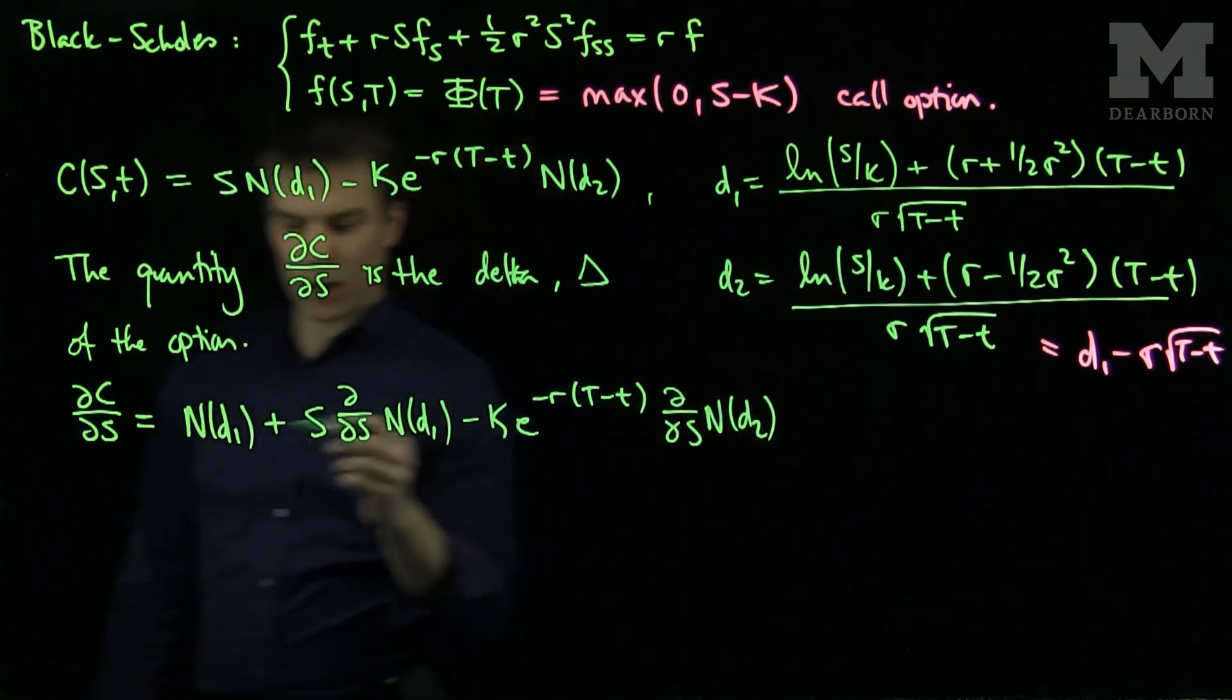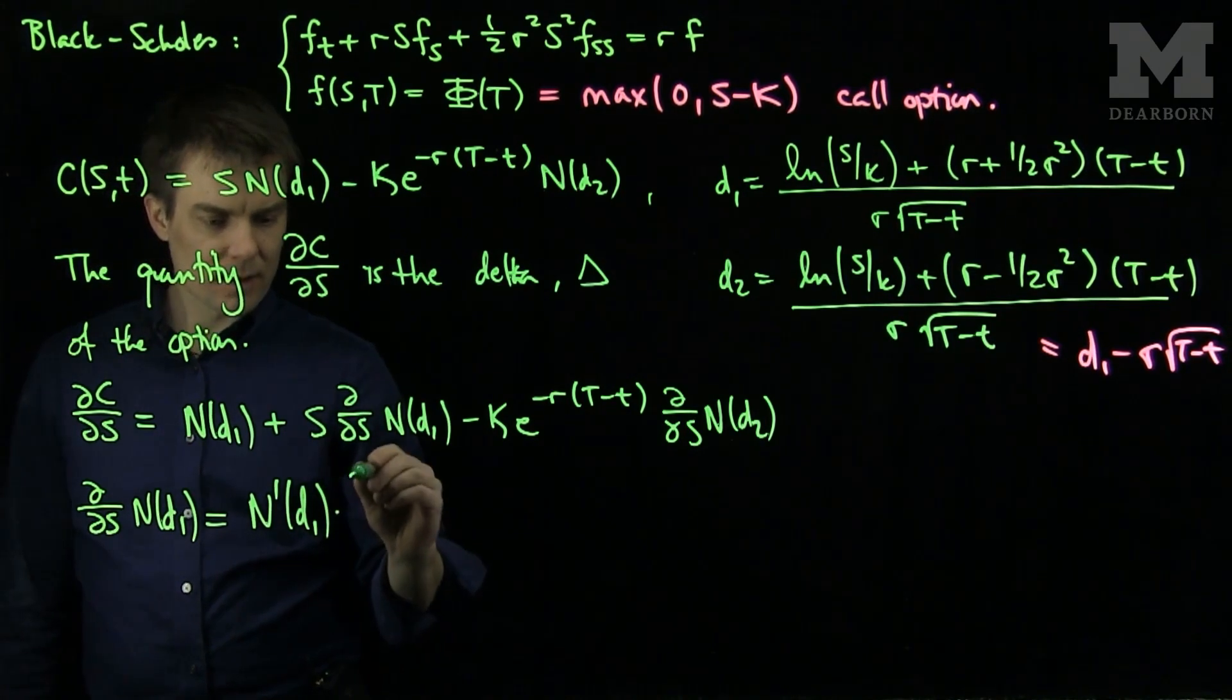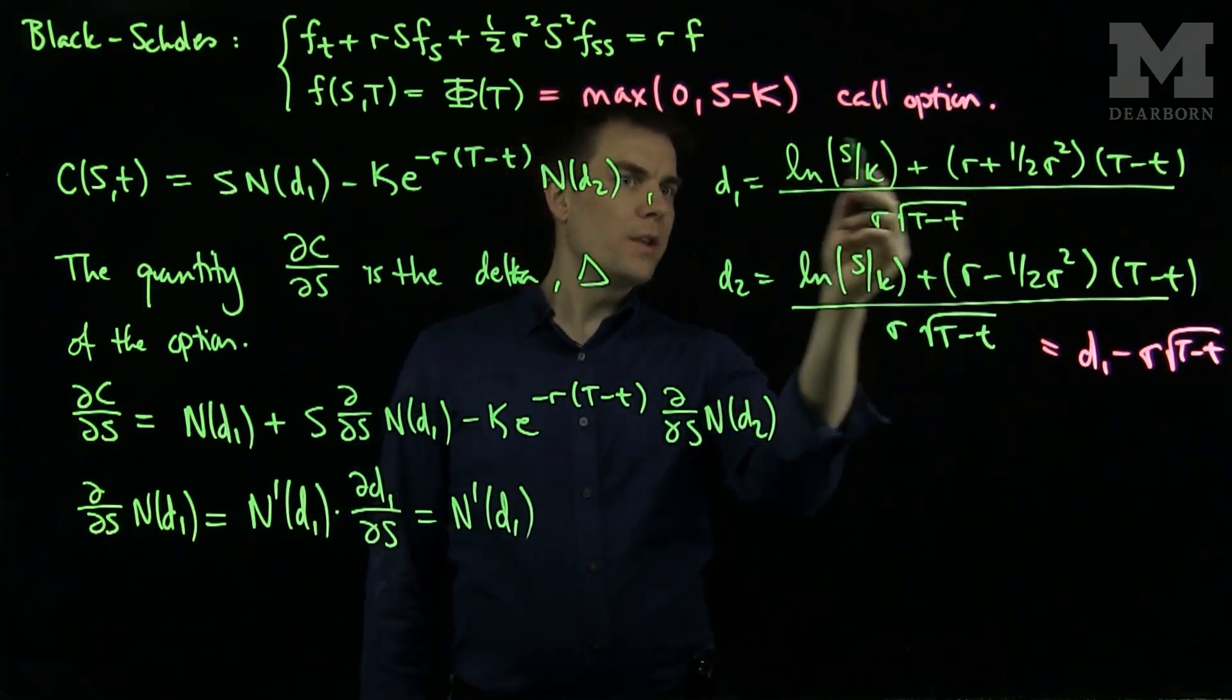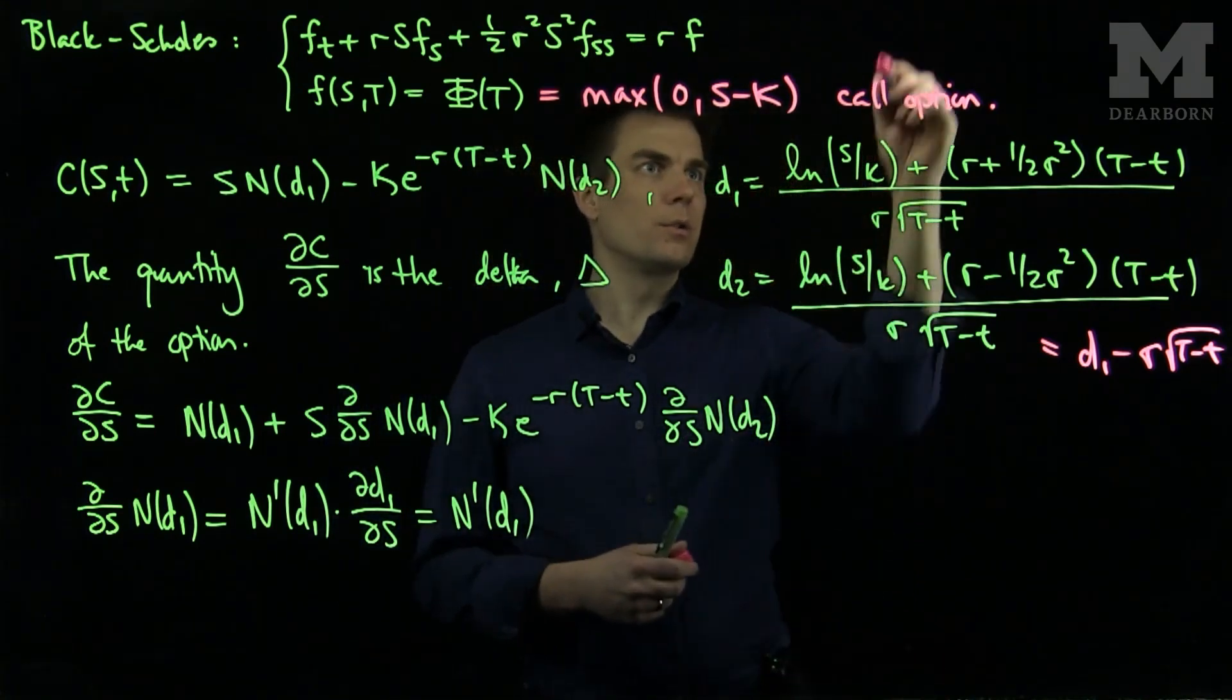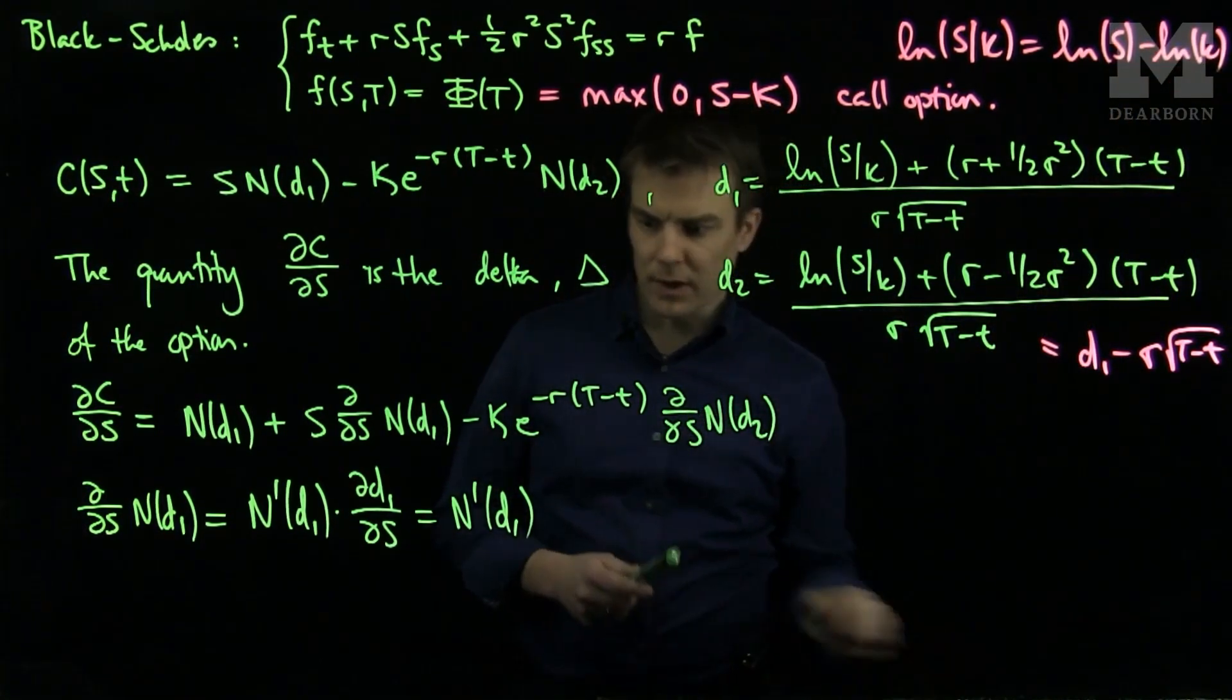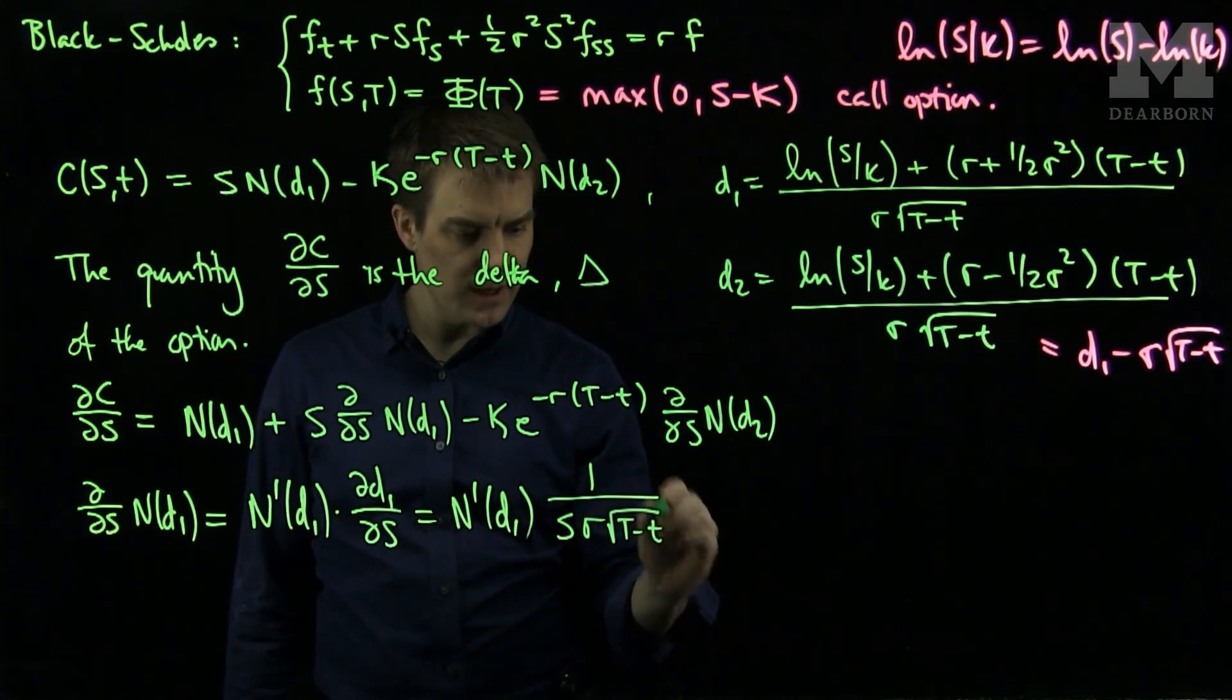To compute the derivative with respect to S of N(D1), we'll use the formula for D1. So ∂/∂S of N(D1) is N'(D1) times the derivative of D1 with respect to S. The derivative of D1 with respect to S only cares about this first quantity. We can write the logarithm term, log(S/K), as log(S) minus log(K). So the derivative of D1 with respect to S is 1/(S sigma sqrt(T-t)).